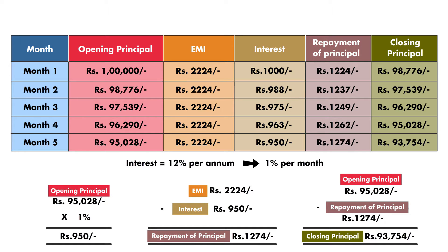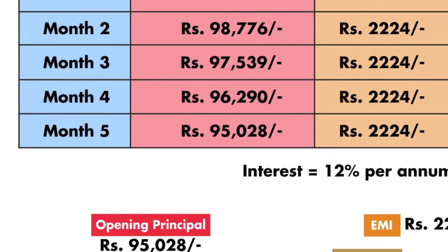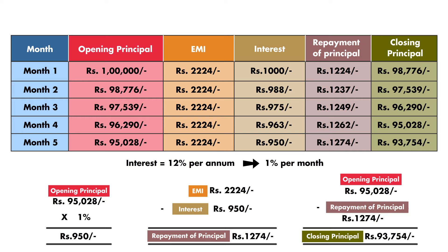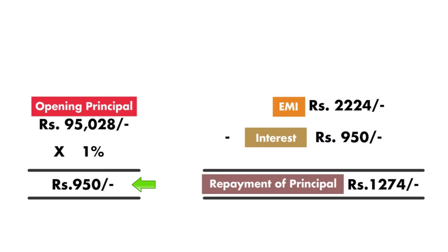Let's assume that the lending rate increases by 1% effective the 5th month. In the schedule, we will see that the loan outstanding in the 5th month is Rs. 95,028. The interest rate has increased from 12% per annum to 13% per annum. A 13% yearly interest is equal to a monthly interest of 1.083%. Before the increase, the interest component in the EMI was Rs. 950 and the principal component was Rs. 1,274.